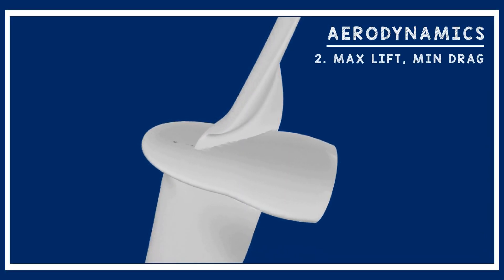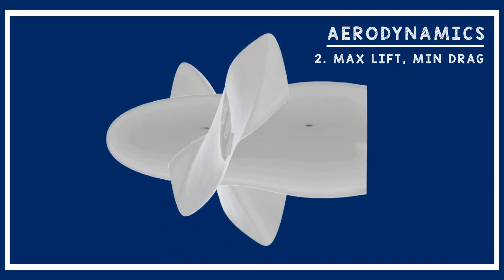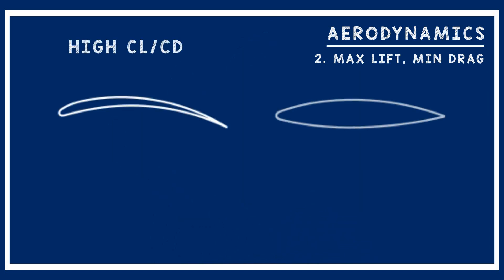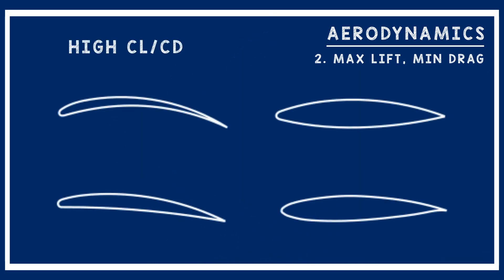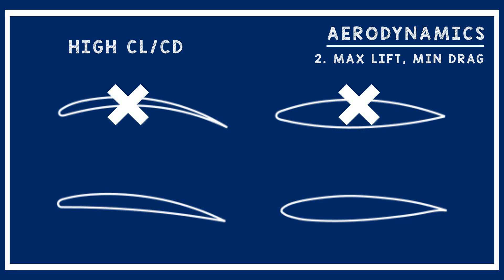Second, we want to generate as much lift with as little drag as possible. The component of lift normal to the rotational axis produces the force to rotate the turbine, while drag acts in opposition, slowing the turbine and reducing power. So we want an airfoil with a high CL to CD ratio. We also need to consider additional factors: the section should not be too thin for structural reasons, should not be sensitive to surface imperfections given the turbine's small size, and should have benign stalling characteristics to give a margin of safety in testing.